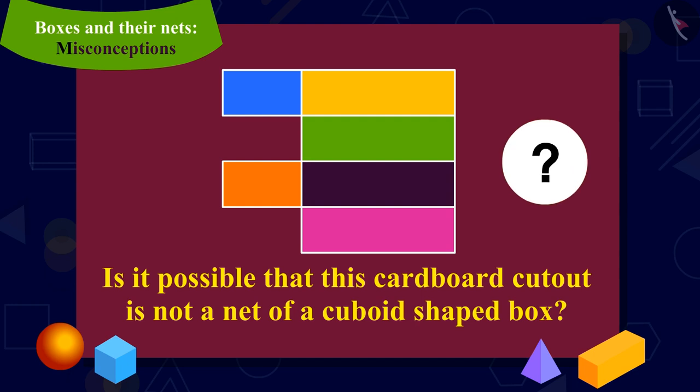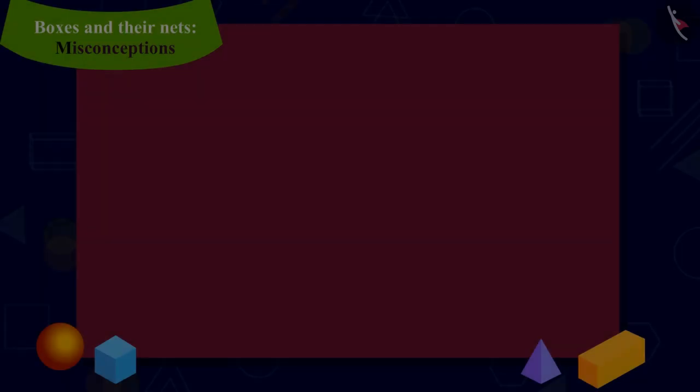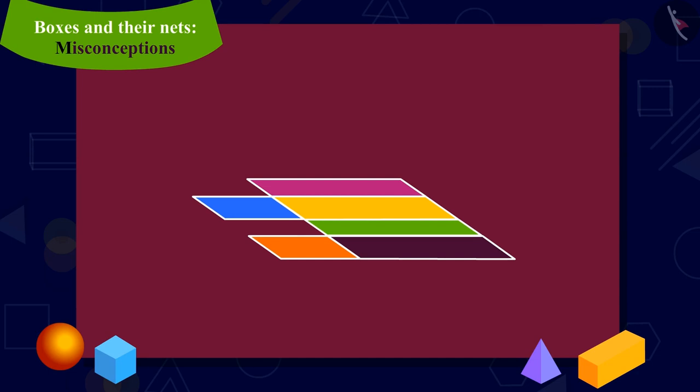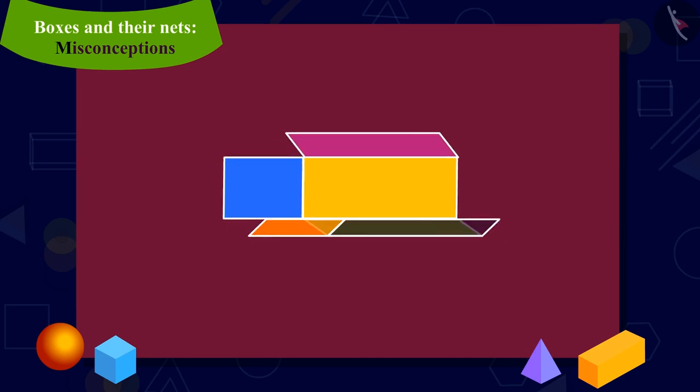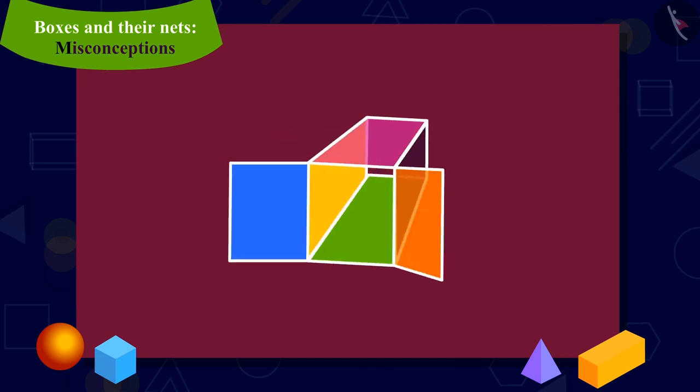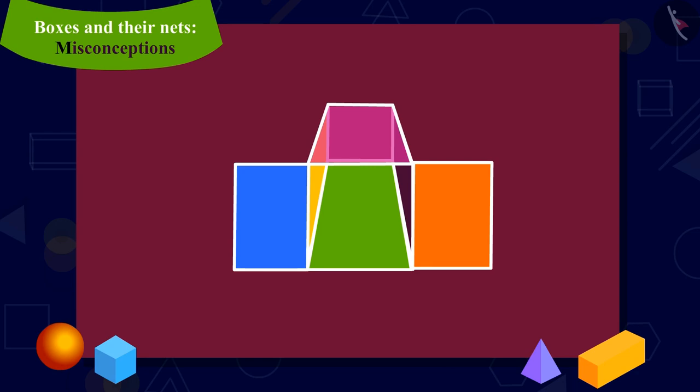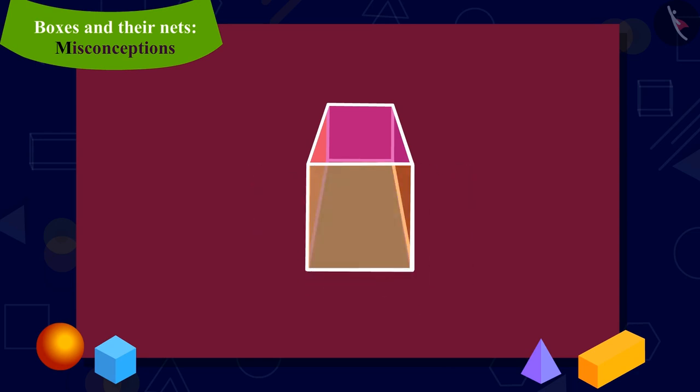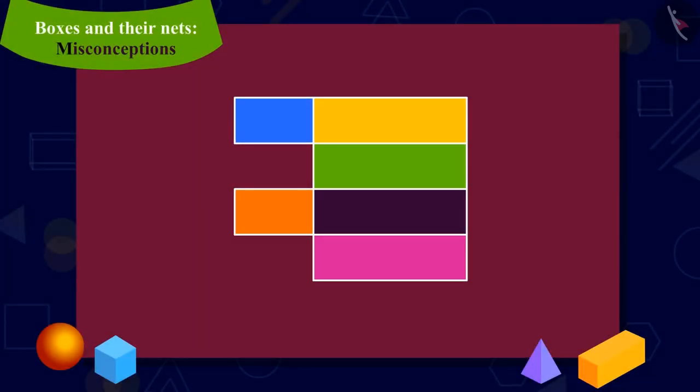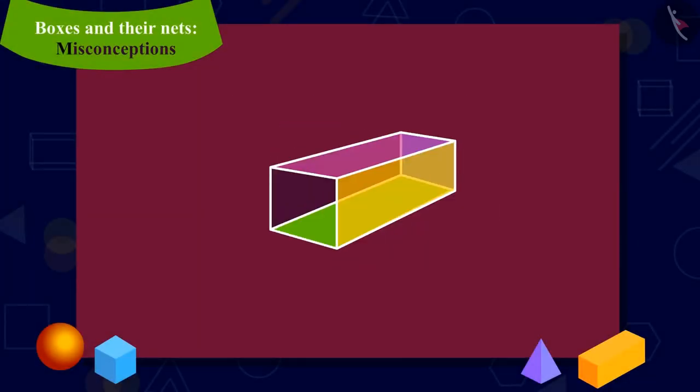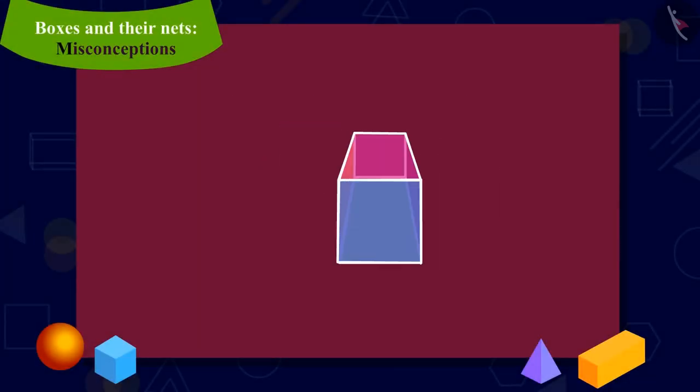Then can it be possible that this cardboard cutout is not a net of a cuboid shaped box? Let us try to fold this cardboard cutout. Here, the two left surfaces are covering the same part of the box. Thus, we are not able to make a cuboid shaped box.